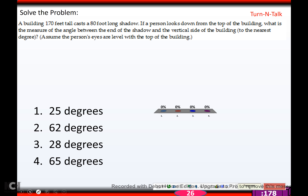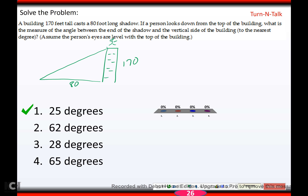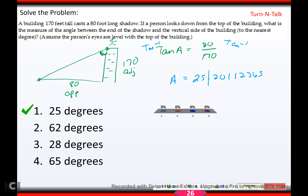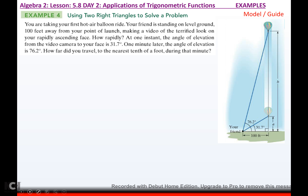Try this one — hit pause and come back when you're ready. Hopefully you got 25 degrees. A building is 170 feet tall and casts an 80-foot shadow. A person at the top looks down; what is the angle between the end of the shadow and the vertical? From that angle, opposite is 80 and adjacent is 170, so use arctan. That gives A equals 25.20 degrees, which to the nearest degree is 25 degrees.